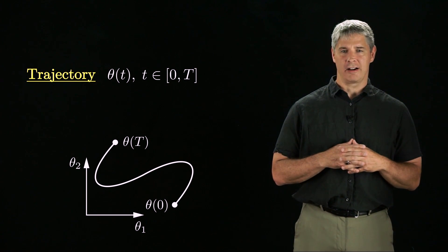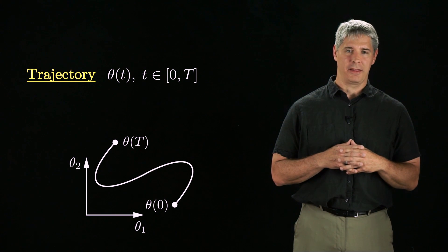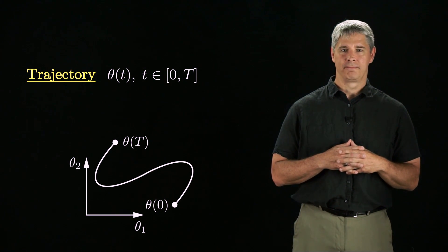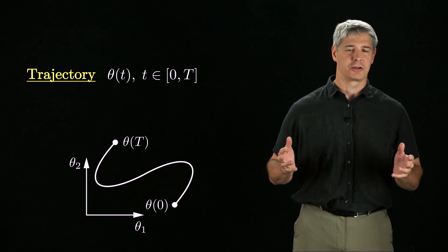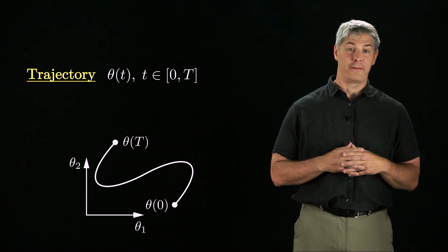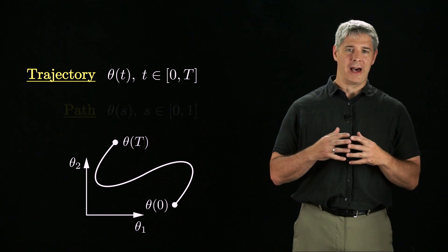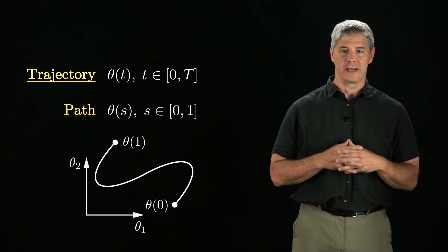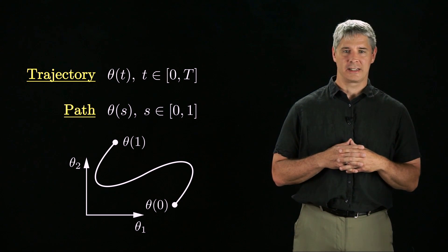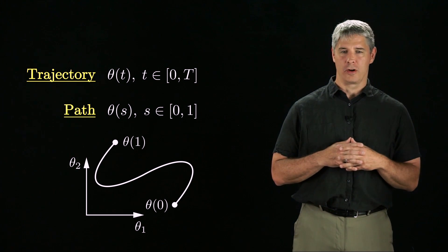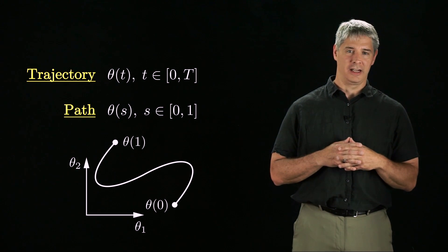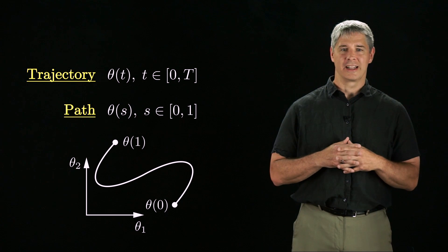In some cases, it is desirable to separate the C-space path from the speed at which it's followed. For example, we might plan a geometric path for a mobile robot to avoid obstacles on the floor without worrying about how fast the path is followed. We define a path to be a curve in configuration space as a function of a path parameter s that goes from zero to one. As s increases from zero, the robot moves from the start configuration at θ(0) to the end configuration at θ(1).